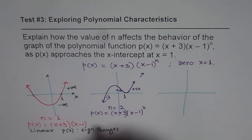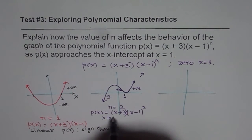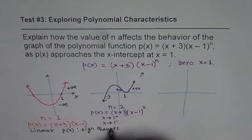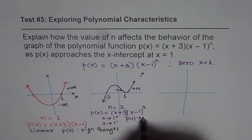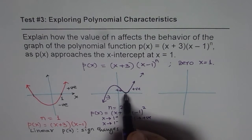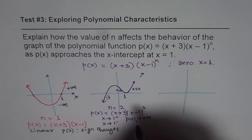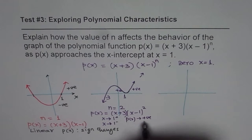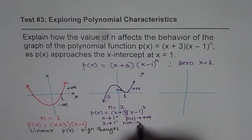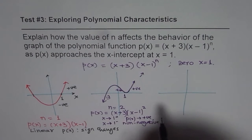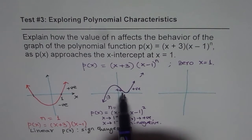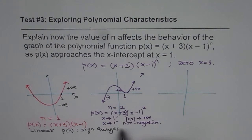As x approaches 1 from the positive side or from the negative side, the polynomial value is positive — it approaches zero at the x-intercept, but it is non-negative. We can say that the graph does not change the sign of the polynomial function when n is even.